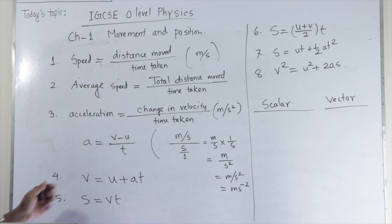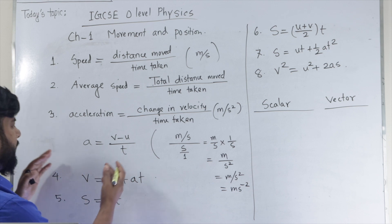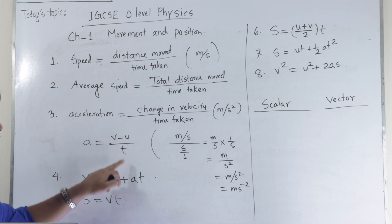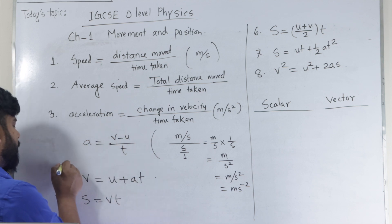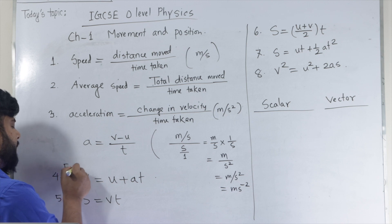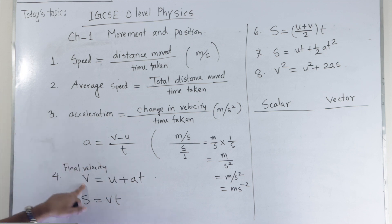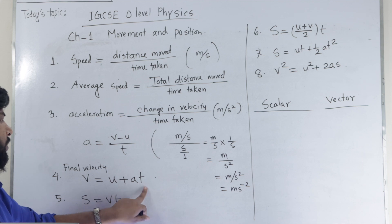If we want to calculate the final velocity, then we can rearrange this formula: A equals V minus U divided by T. We can write V equals U plus A times T. So V is the final velocity — final velocity V equals initial velocity U plus acceleration multiplied by time.